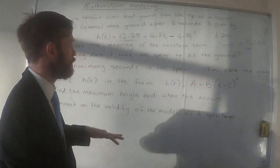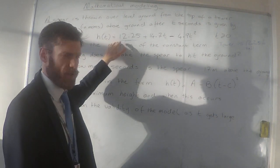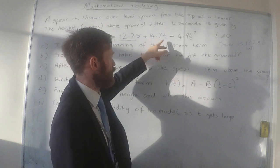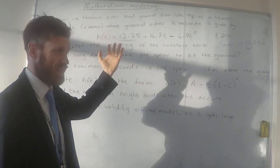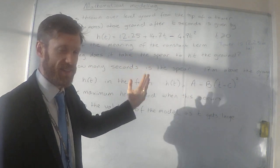So the constant term in these quadratic equations refers to the fact that when the variable is zero, and then obviously in this problem, that means the height of the tower.